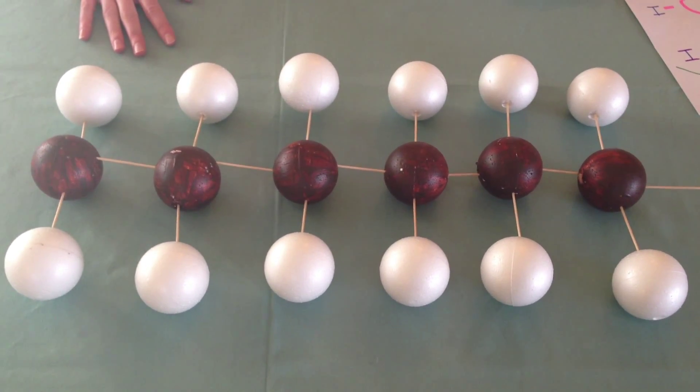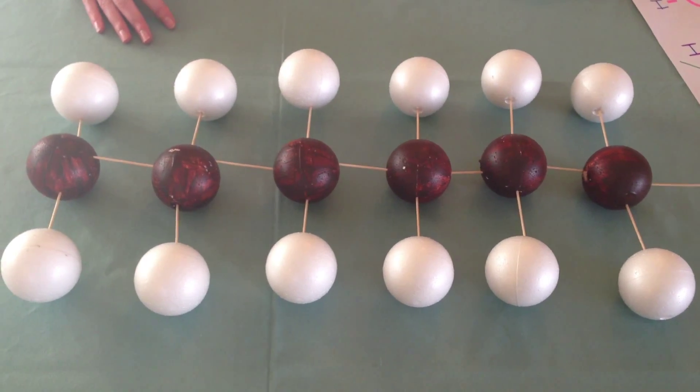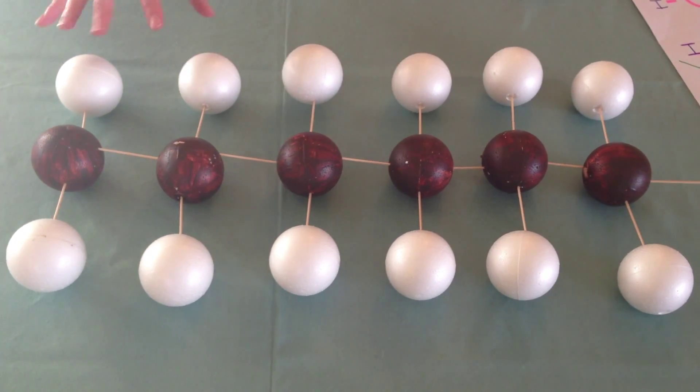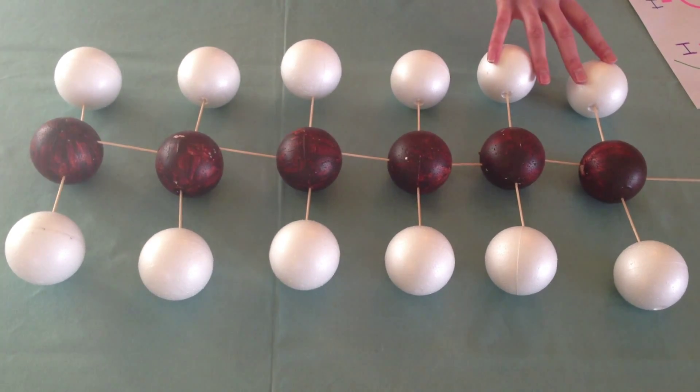This example shows three repeat units of ethene. This is because there are three sets of ethene.